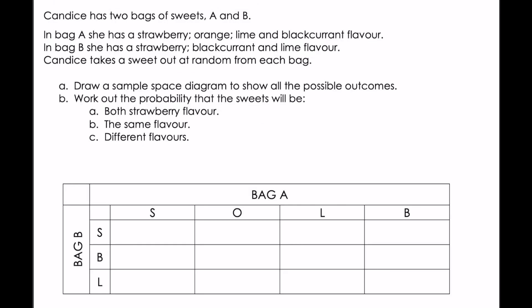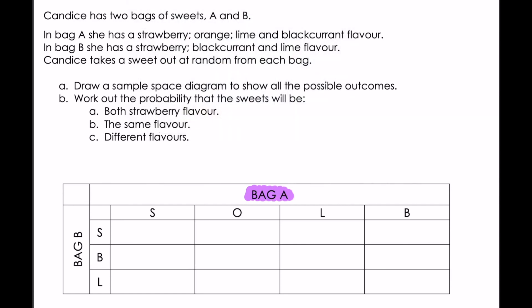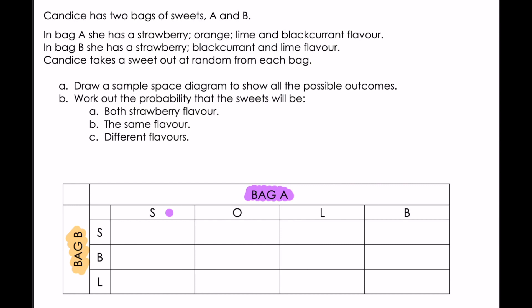Next example: Candace has two bags of sweets, A and B. In bag A she has a strawberry, an orange, a lime, and a blackcurrant flavor. In bag B she has a strawberry, a blackcurrant, and a lime flavor. Candace takes the sweets out at random from each bag. Draw a sample space diagram to show all the possible outcomes. I've already drawn the diagram — bag A has strawberry, orange, lime, and blackcurrant; bag B has strawberry, blackcurrant, and lime.